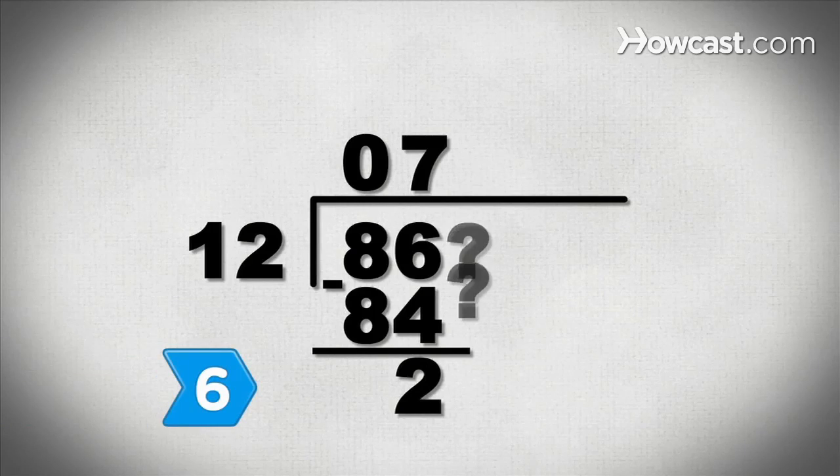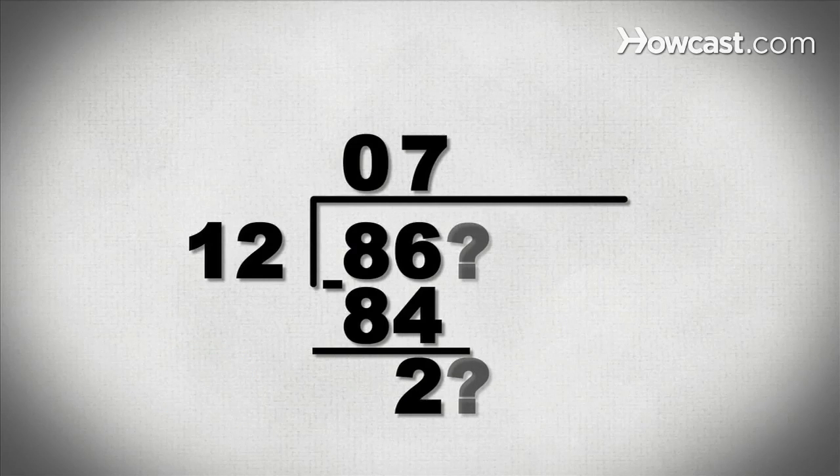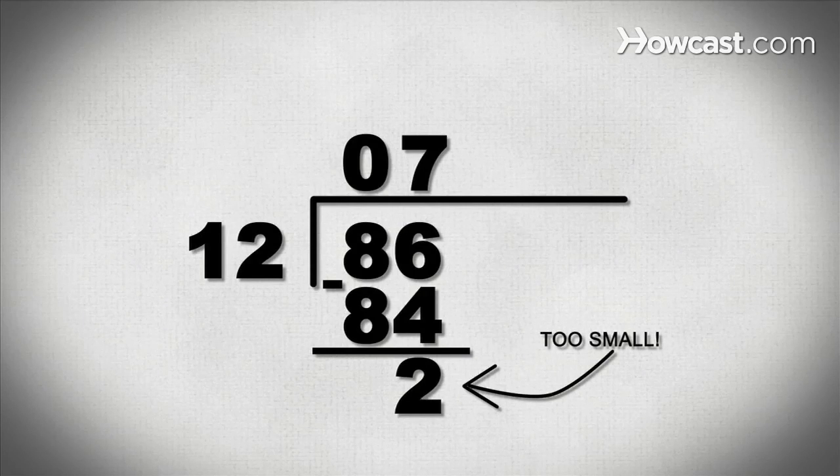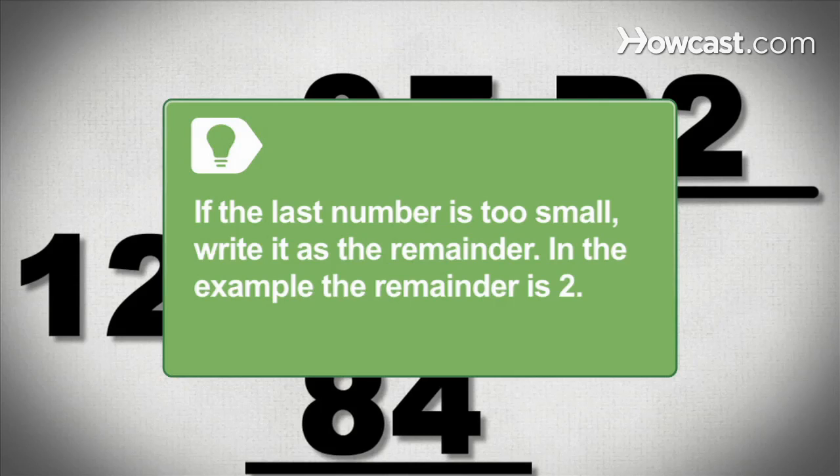Step 6. Bring down the next number in the dividend and continue the same process until there are no more numbers to bring down, or until the final number is too small to divide into. If the last number is too small, write it as the remainder. In the example, the remainder is 2.